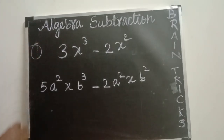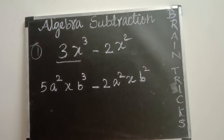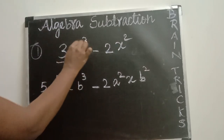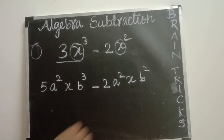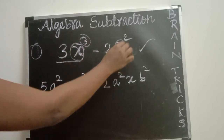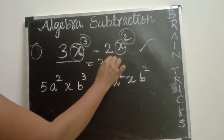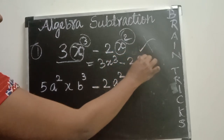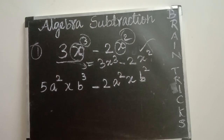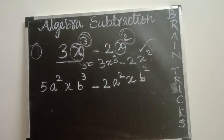Next example: subtraction of 3x power 3 minus 2x power 2. First, check the variable — this term has variable x and this term also has variable x, so both terms have the same variable. Next, check the power: this variable has power 3, and this variable has power 2 — they are not the same. So you cannot do subtraction. The final answer is 3x power 3 minus 2x power 2; you just write the question as it is. Both terms have the same variable, but the powers are different, so you cannot do subtraction.